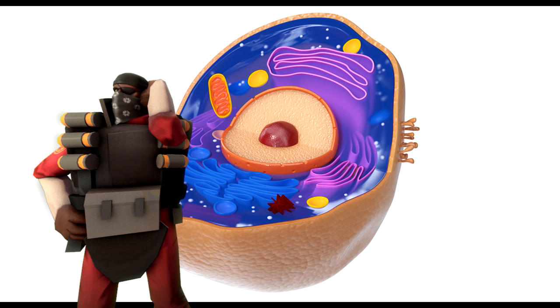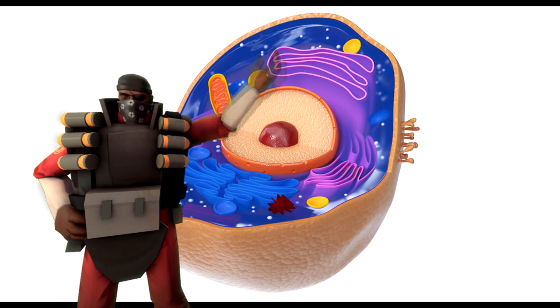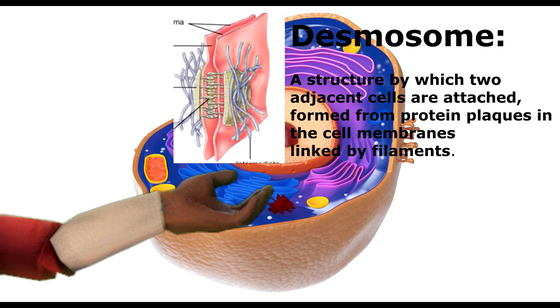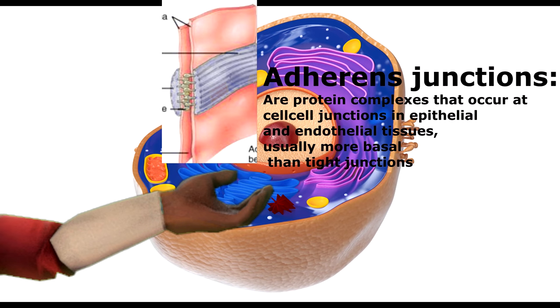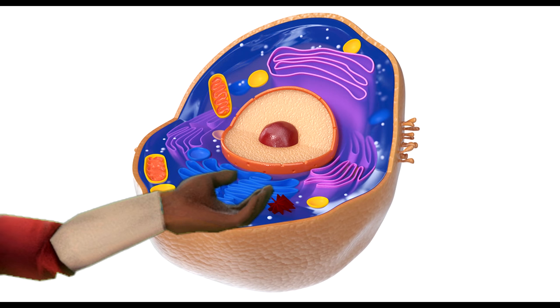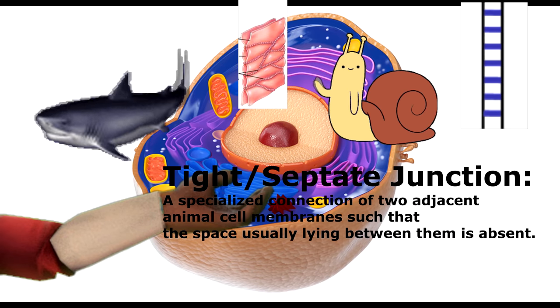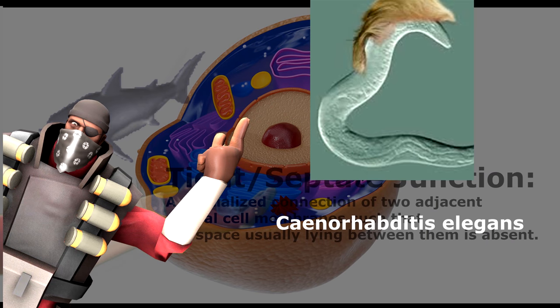There is much more to animal cells than just that. Animal cell junctions are unique, as they are composed of things like desmosomes, hemidesmosomes, adherens junctions, and depending on whether it is a vertebrate or invertebrate, tight junctions or septate junctions. Quick note: an animal known as C. elegans has its own special junction known as the apical junction. Good thing I caught that just in time.